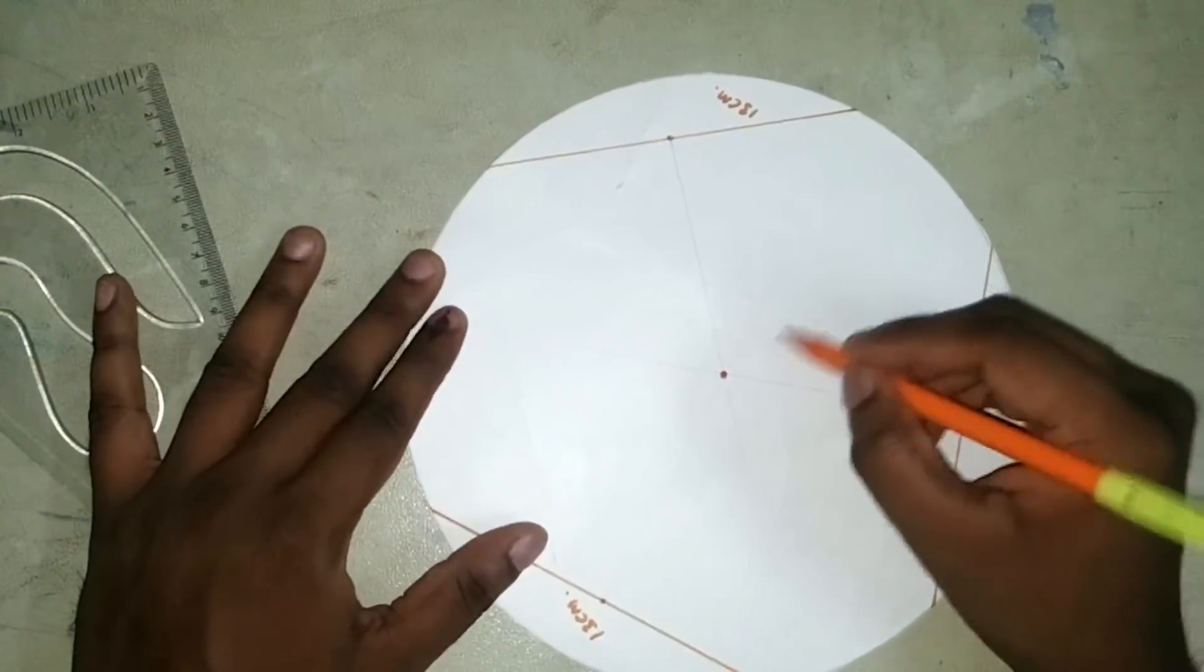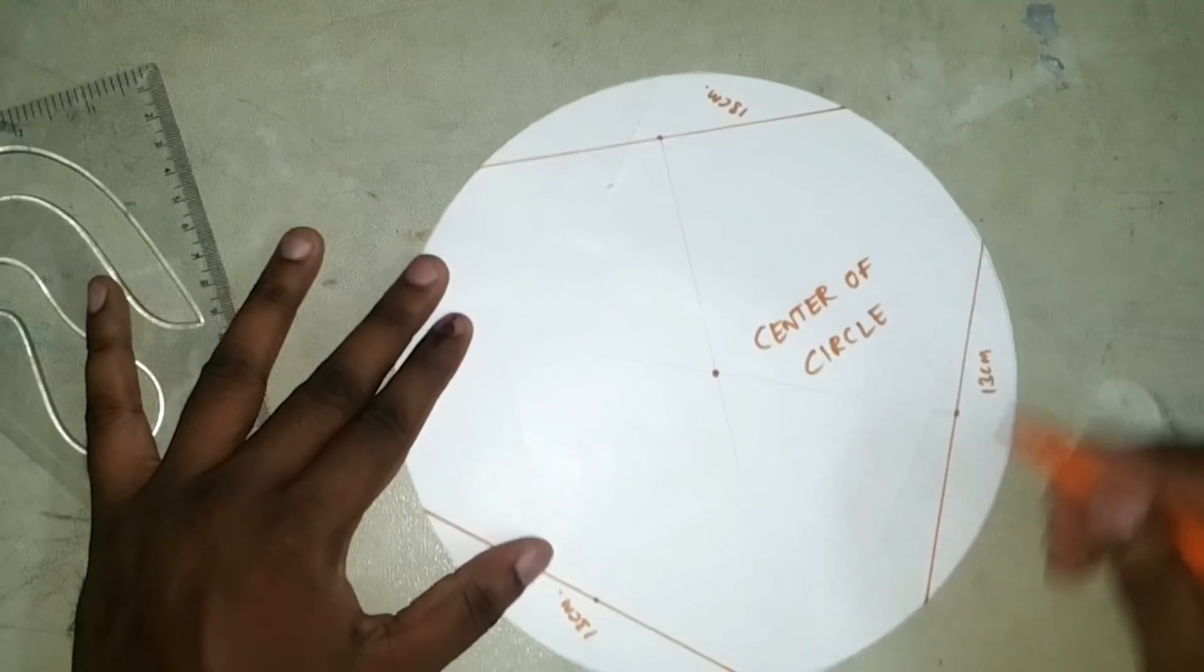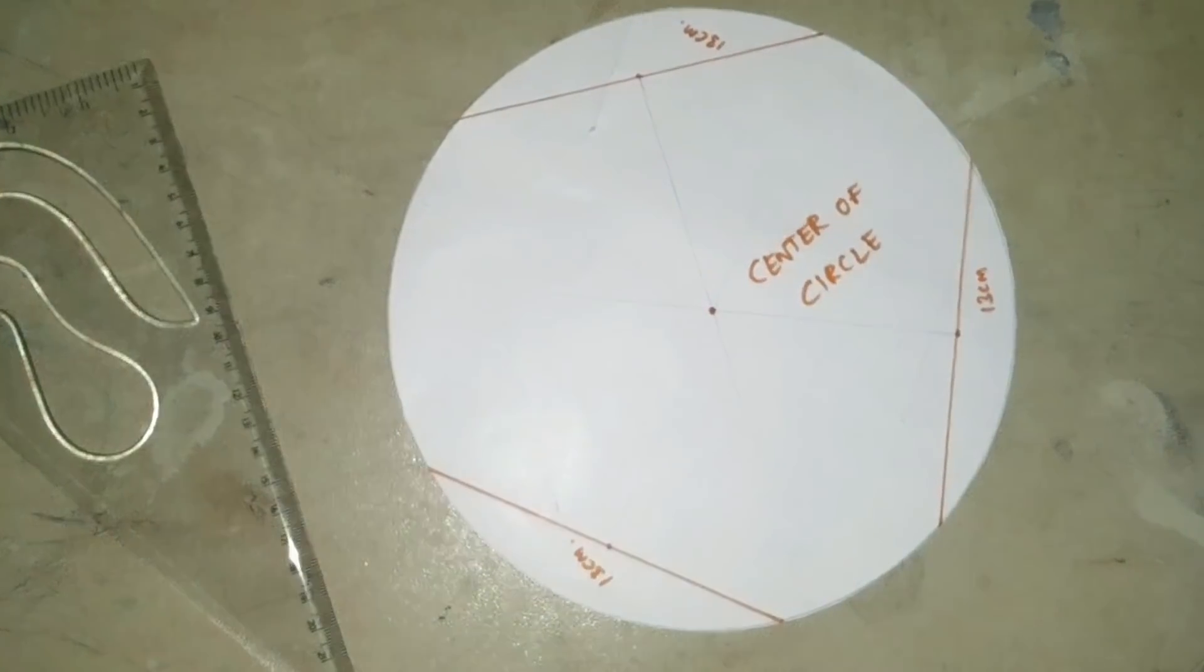And now, you've got the center of the circular plate. This is one of the easiest ways to mark the center in circular plates.